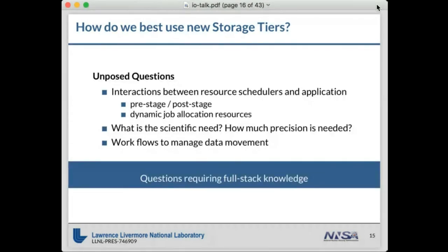At procurement time, unanswered questions include: how will the resource scheduler, applications, and all pieces of the system interact? Can the resource scheduler be made more aware? Applications need to give the resource scheduler more details about their jobs and intentions so it can make better decisions. What are the scientific needs? How much precision is needed, and what workflows or data movement and management tools can we use? When you add a new storage tier, you need to understand how it has ripple effects up and down the full stack.